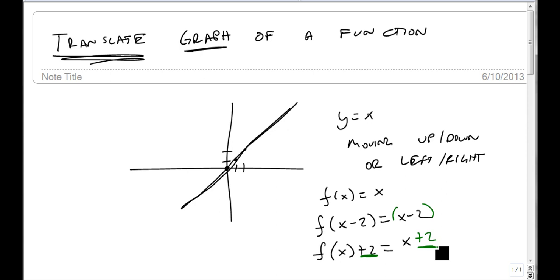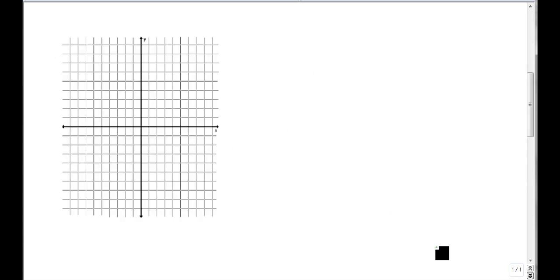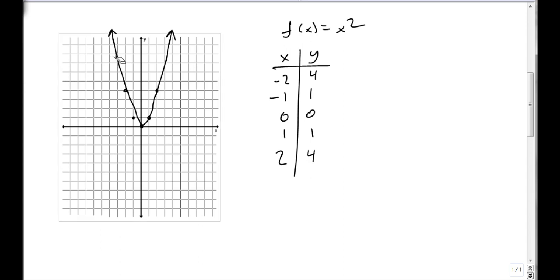For our first example, let's look at a very basic f(x) equals x squared graph. If we pick our x's, we can find our matching y's. We're going to pick minus 2, minus 1, 0, 1, and 2. So minus 2 squared is 4, 1, 0, 1, 4. And we get this very basic graph like this. Here's our graph.